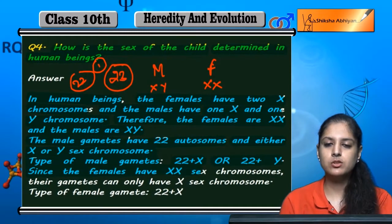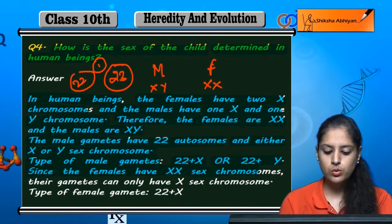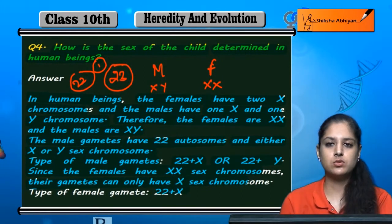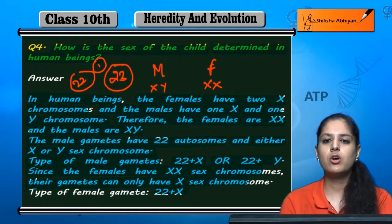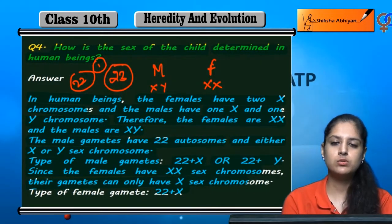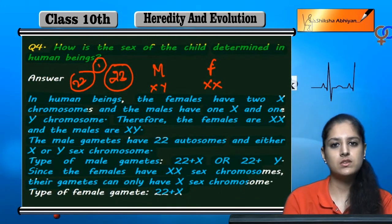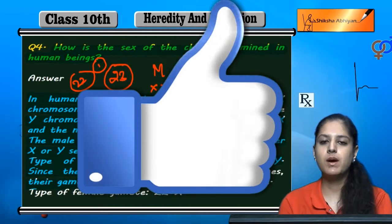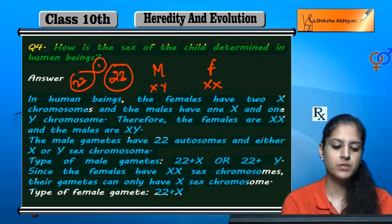Because the female has XX, her gametes can only be 22 plus X — there is no other option. X cannot be replaced by anything else. So 22 is the same for both. The male can have either 22 plus X or 22 plus Y, but the female always has 22 plus X.